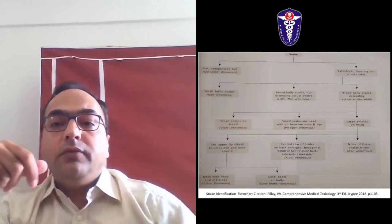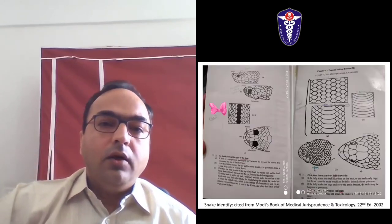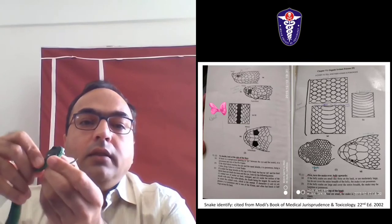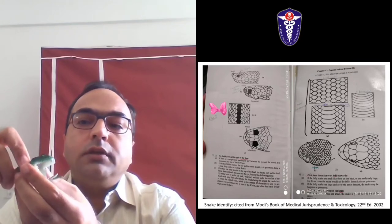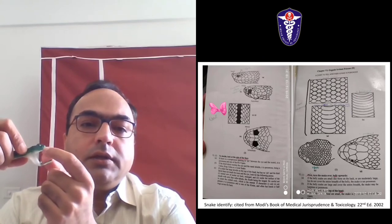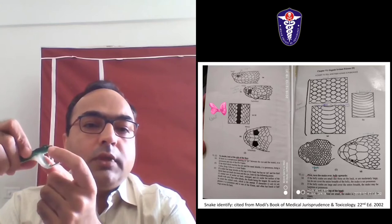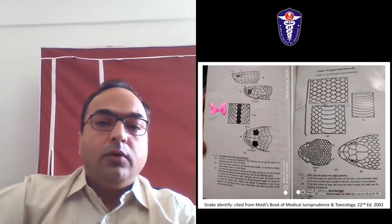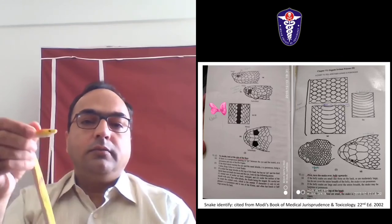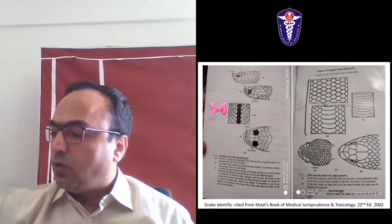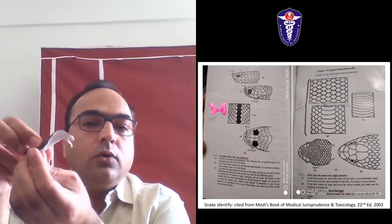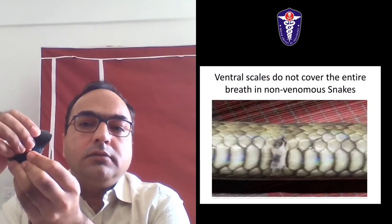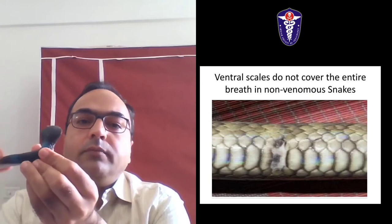If there are large scales on the head, we can examine whether the third upper lip shield touches the eye and nose shield. If it is having a hood, then it becomes a cobra. And if it is not having a hood, then it becomes the coral snake.